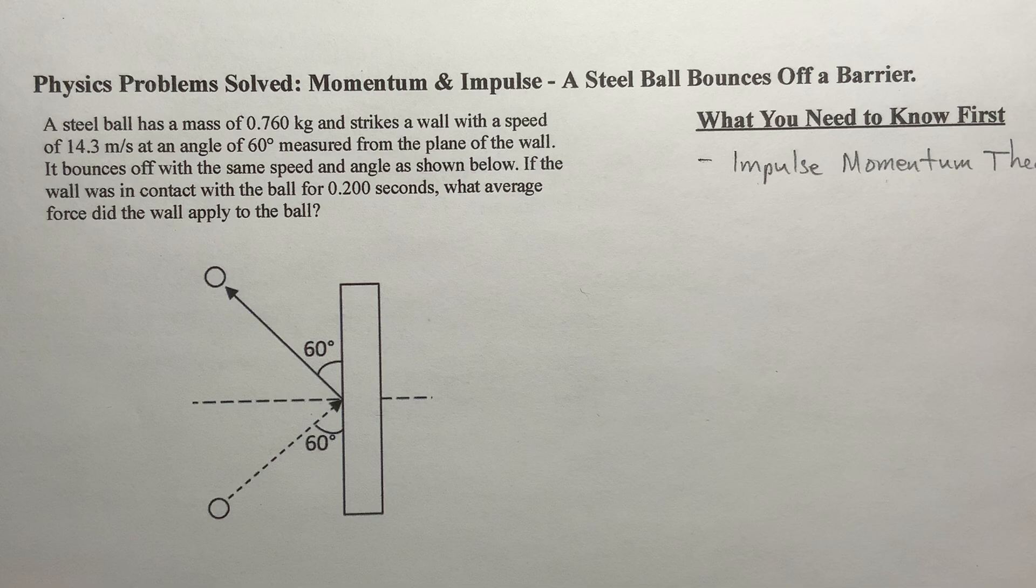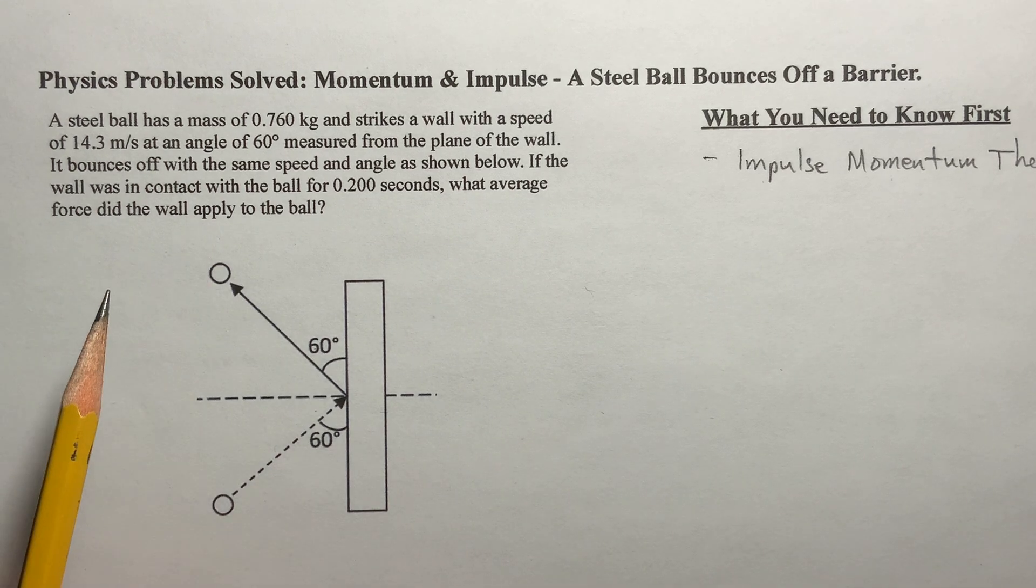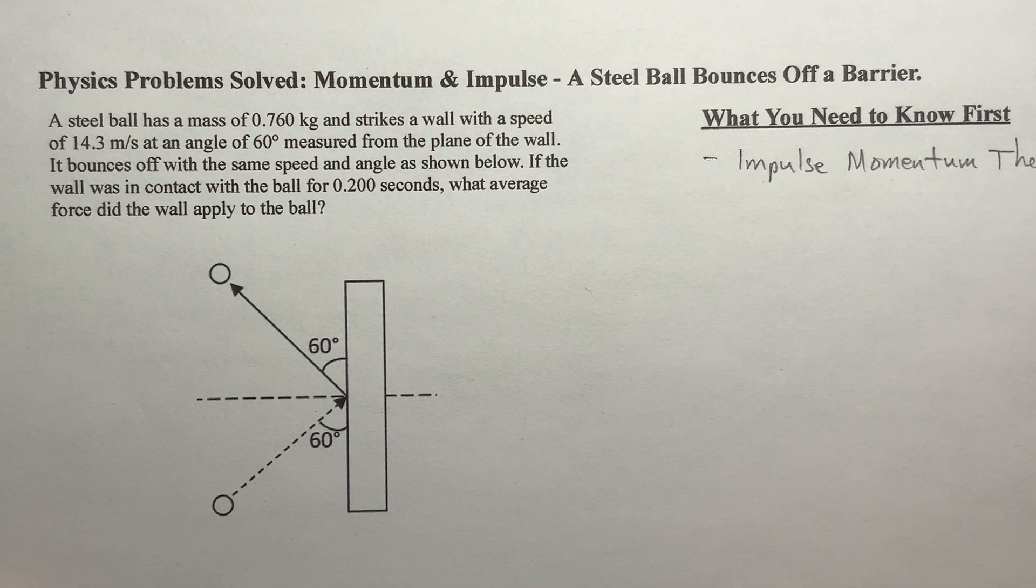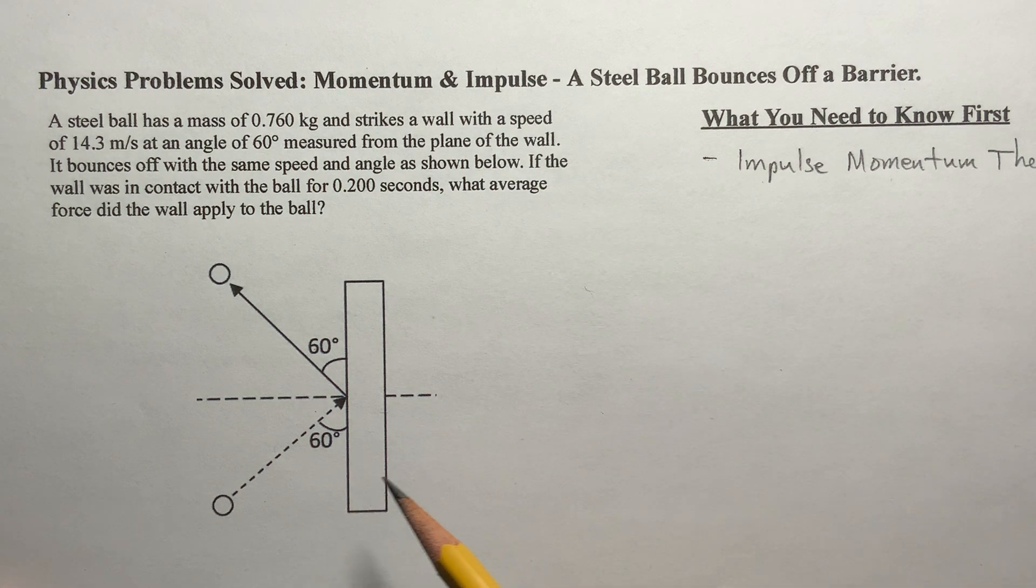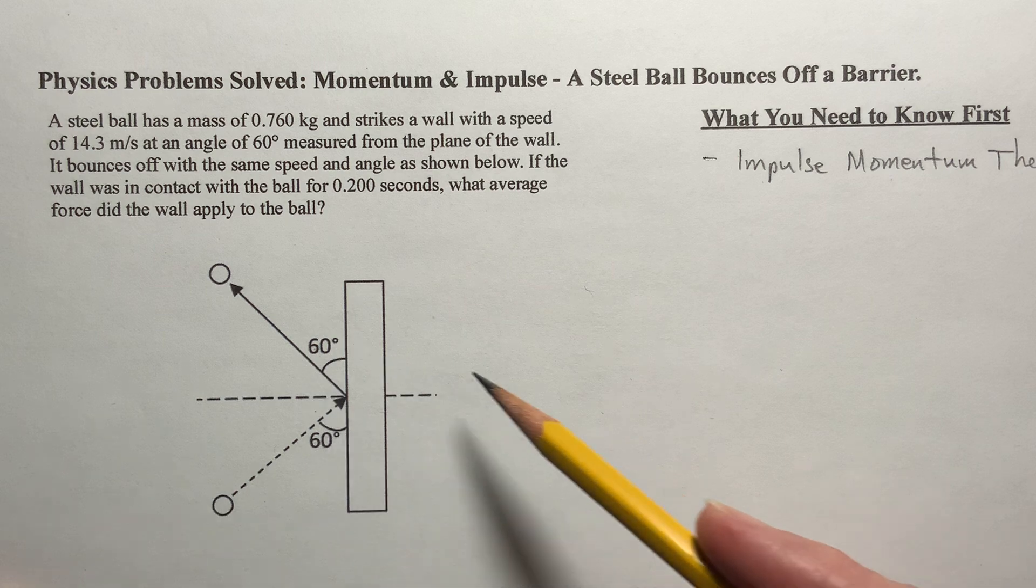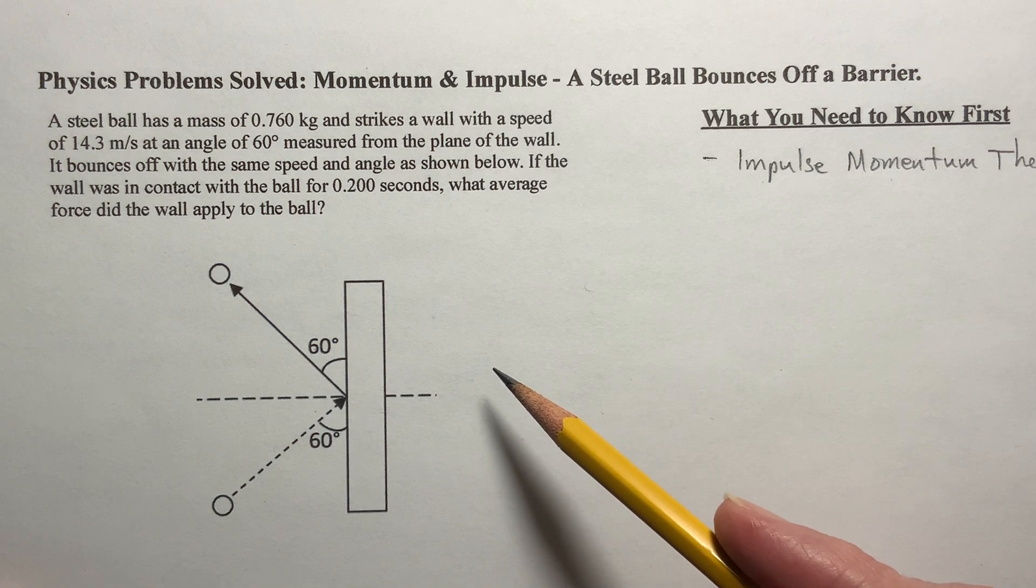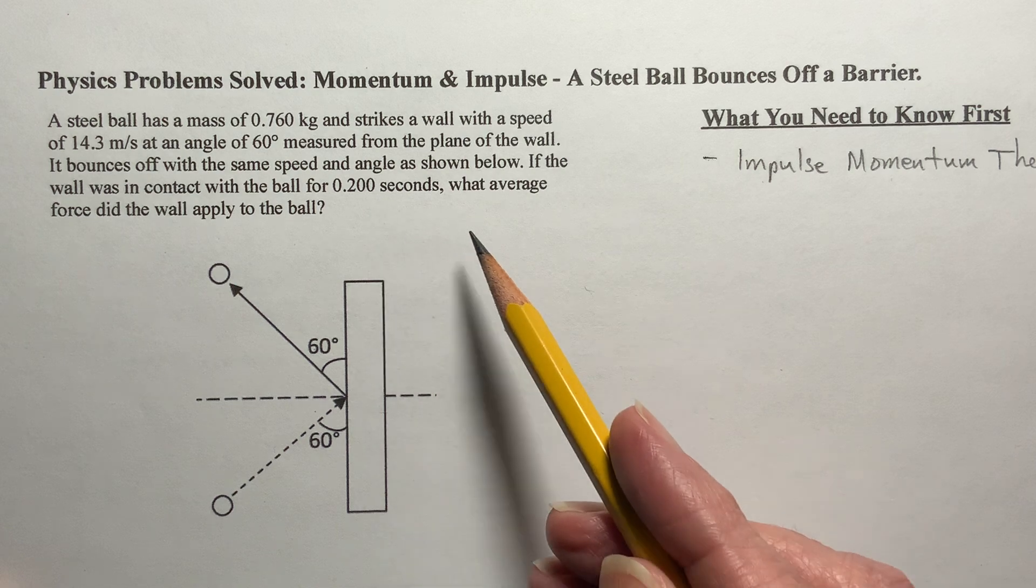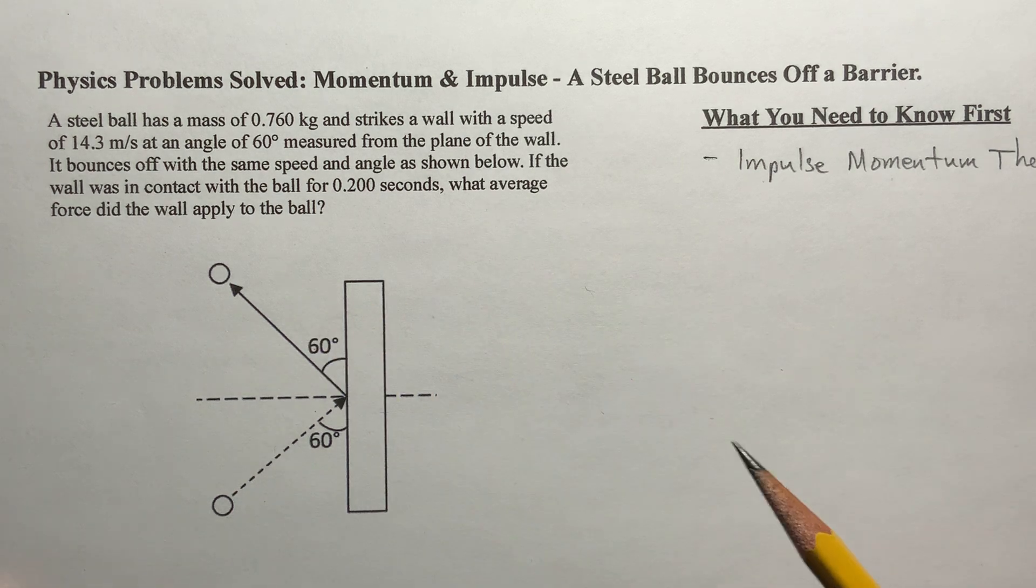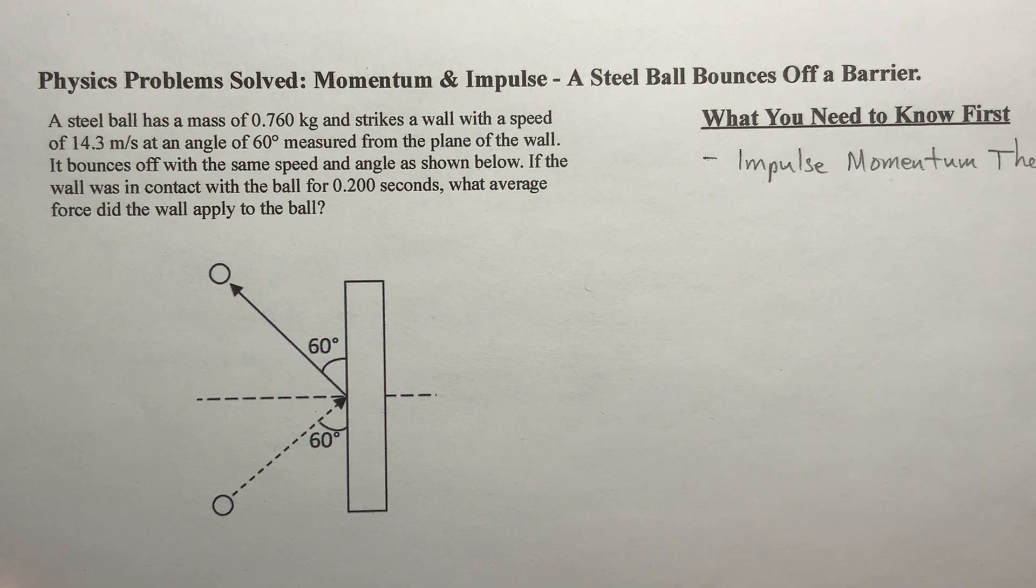So today's problem, we have a steel ball has a mass of 0.760 kilograms and strikes a wall with a speed of 14.3 meters per second at an angle of 60 degrees measured from the plane of the wall as shown here. It bounces off the wall at the same speed and angle as shown. If the wall was in contact with the ball for 0.200 seconds, what average force did the wall apply to the ball?